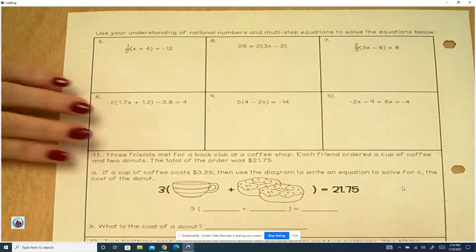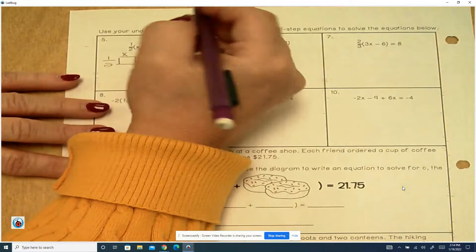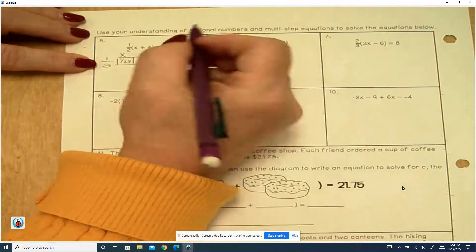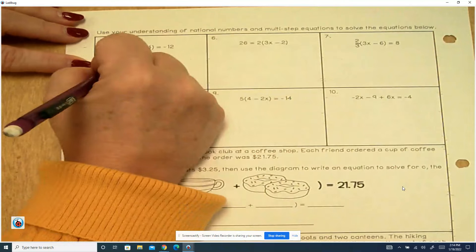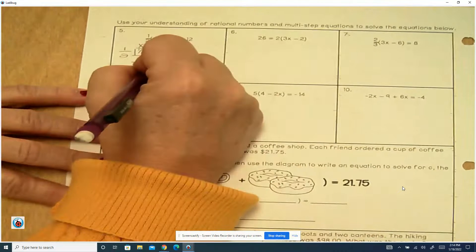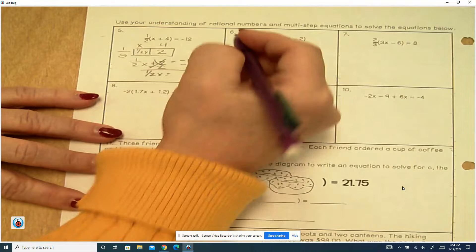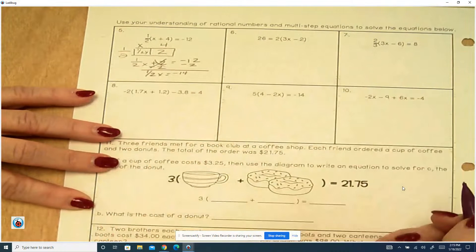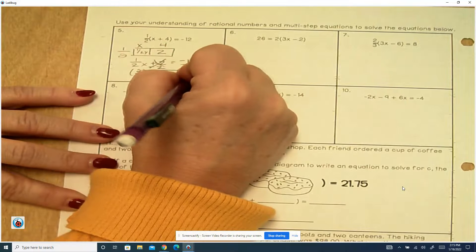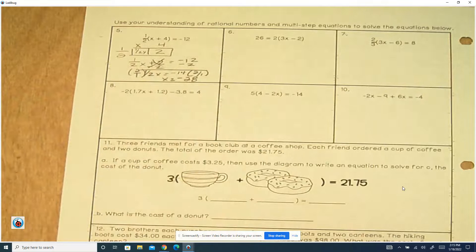On the back side, we've got 1 half. This is x plus 4. 1 half times x is 1 half x. And 1 half times 4 is 2. So we have 1 half x plus 2 equals negative 12 minus 2 minus 2. 1 half x equals a negative 12 plus a negative 2 is a negative 14. And then that's division. So we're going to multiply by the reciprocal, which is 2 over 1. And that makes x negative 28. A negative multiplied by a positive is a negative.